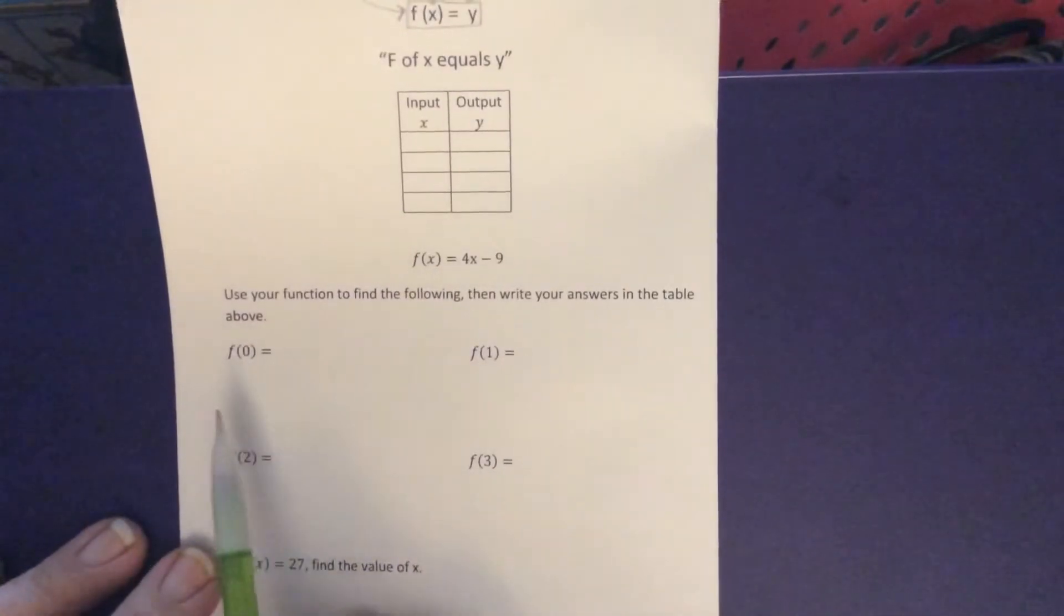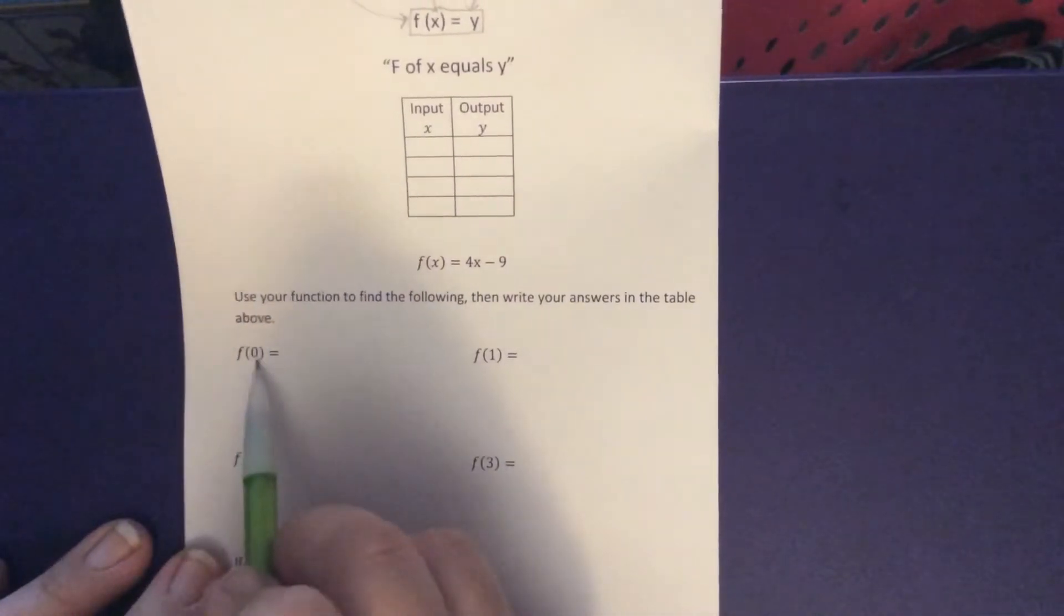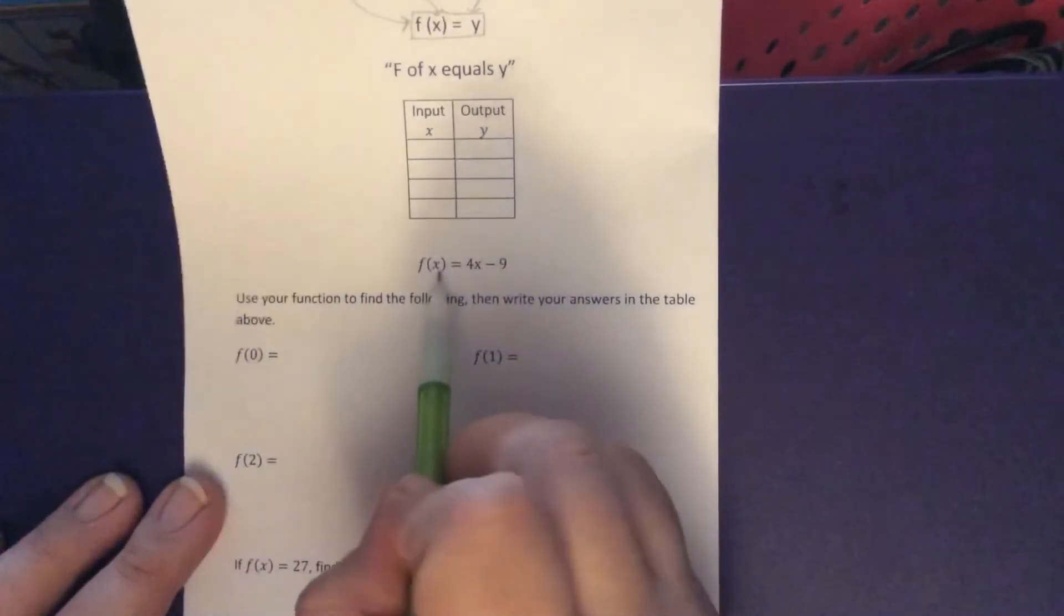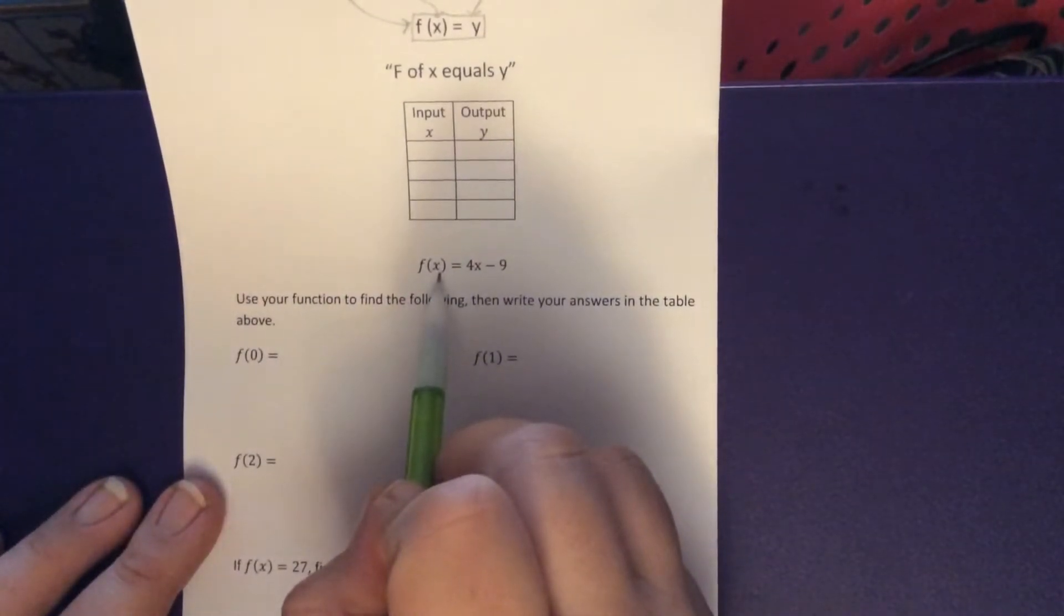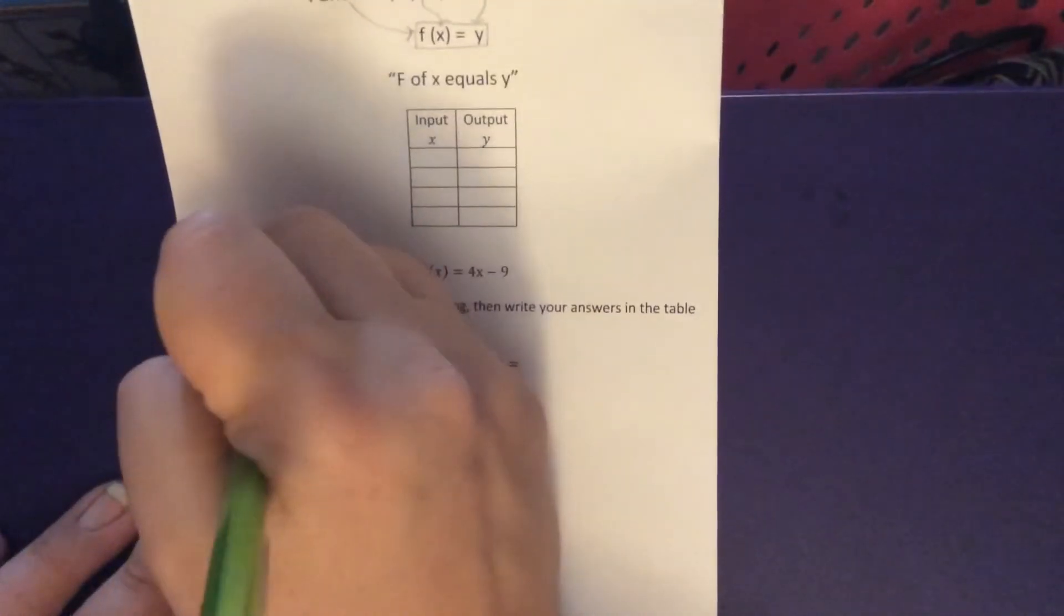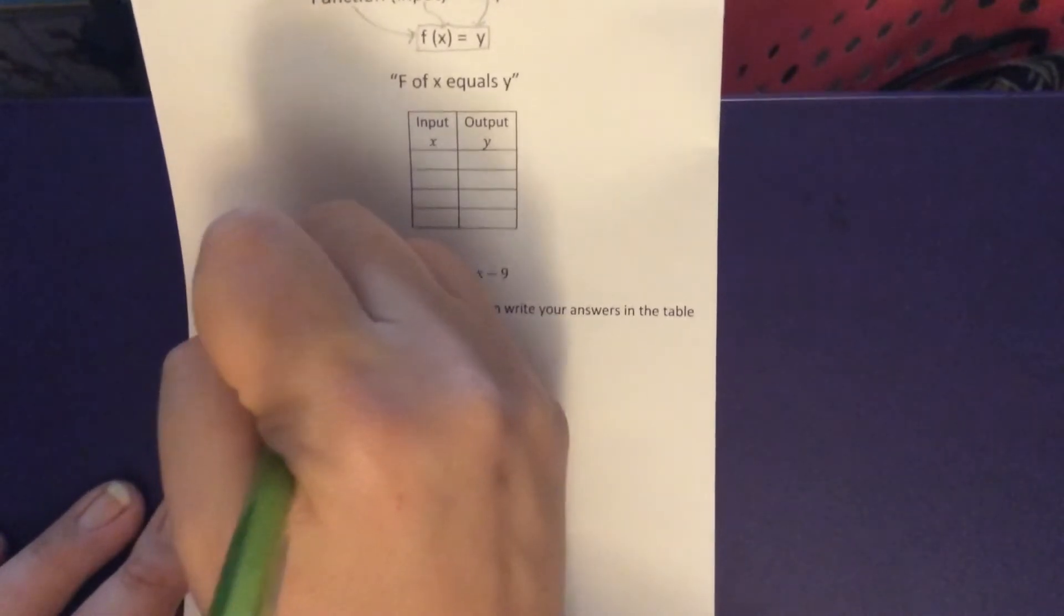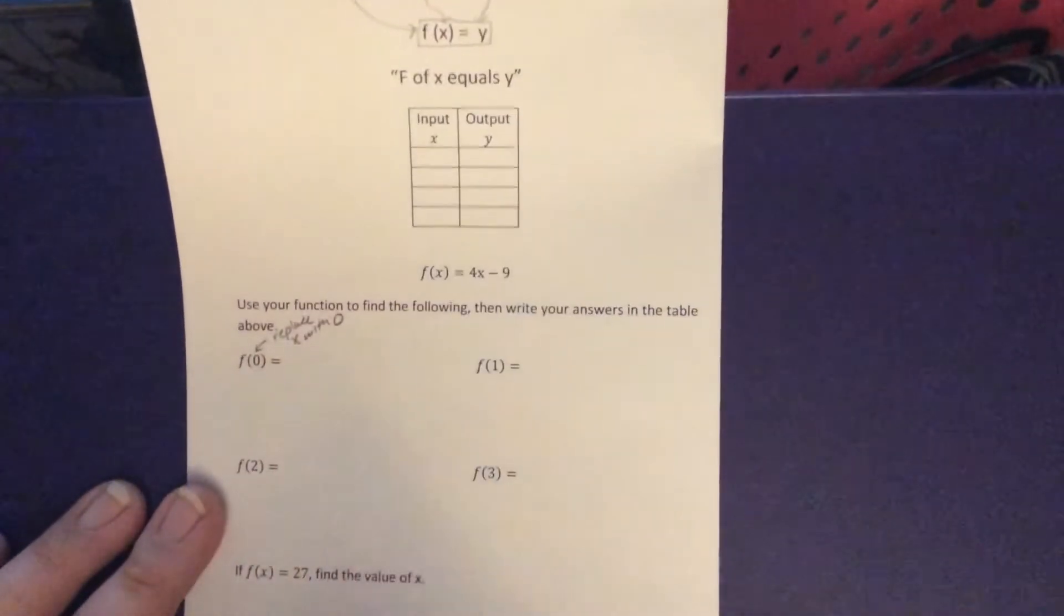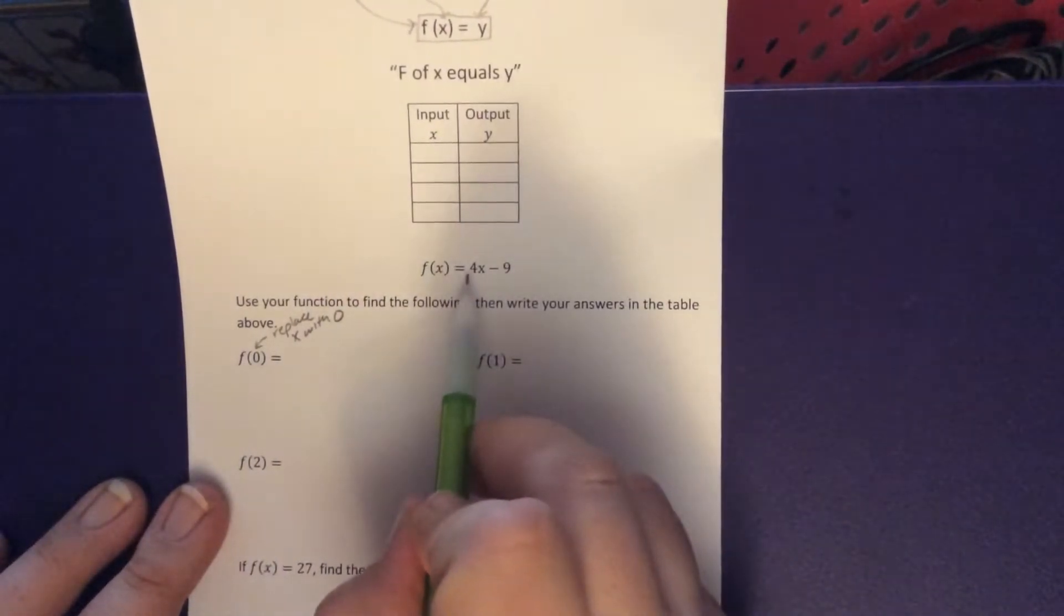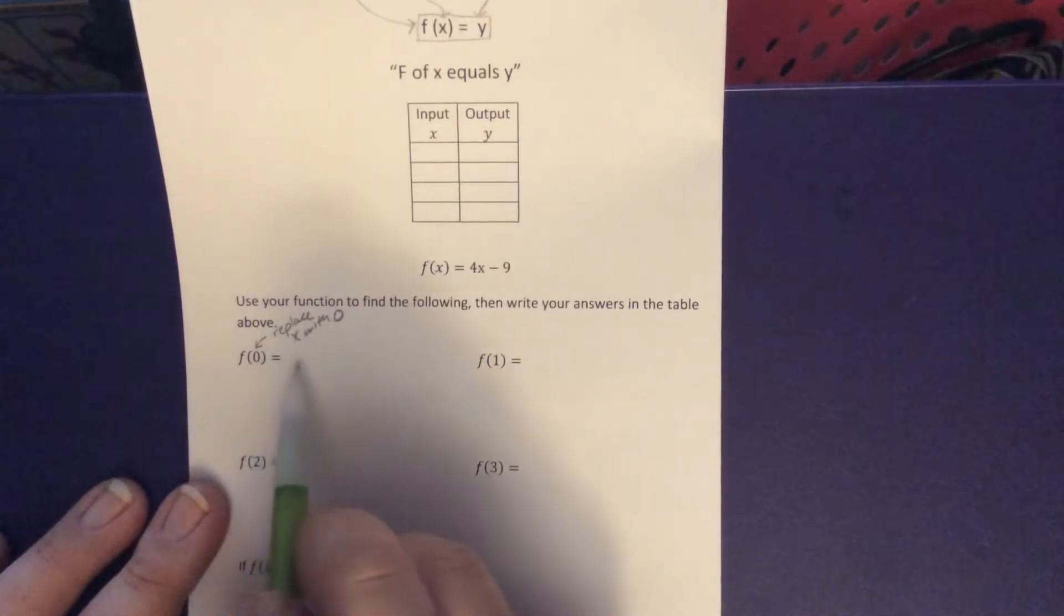So if we look here we have this f parentheses 0 parentheses. So what this means is that 0 is going to be our input. See how 0 used to be an x and it's now replaced with a 0? That's going to hint to us that we need to replace x with 0. So replace x with 0.